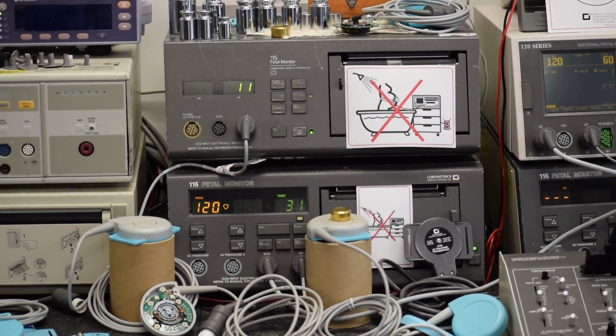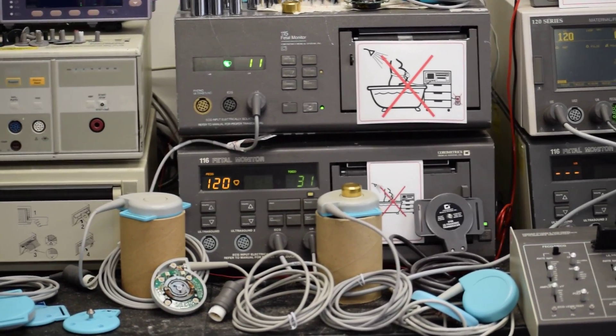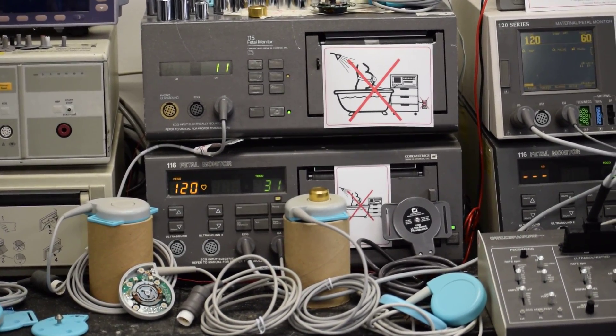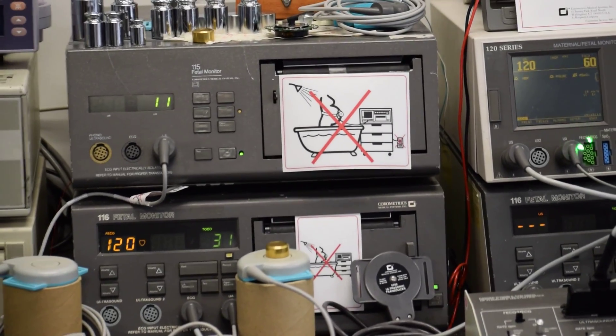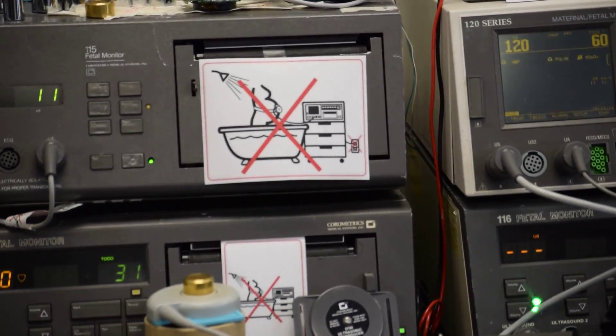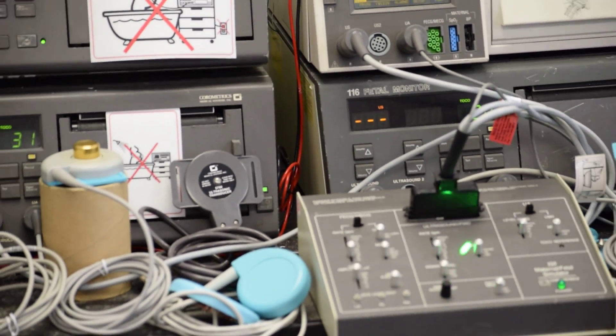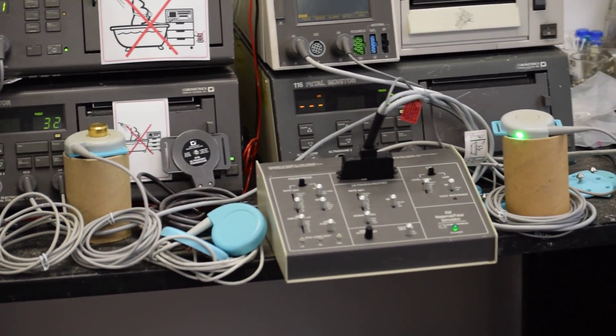These are GE Corometrics fetal monitors: model 115, 116 in the center, on the side top is a 120 series. Bottom is again 116 series, has a fetal simulator connected to it. You see some of the fetal transducers.